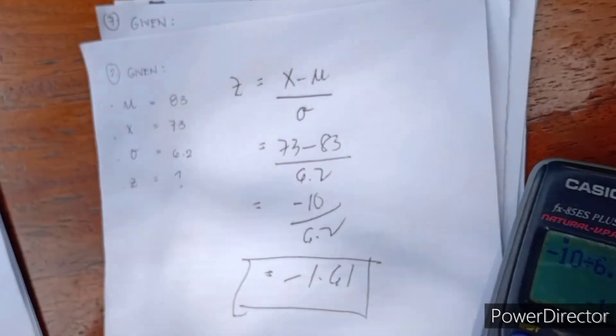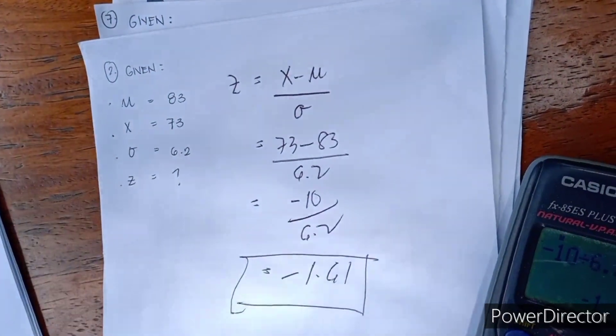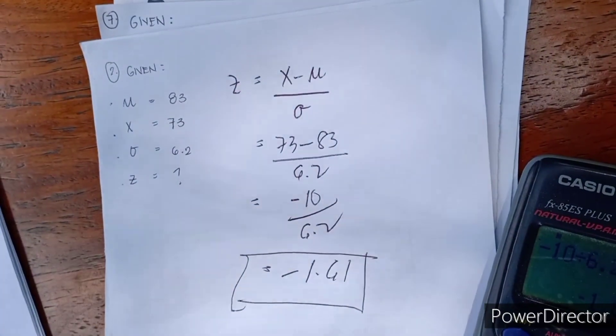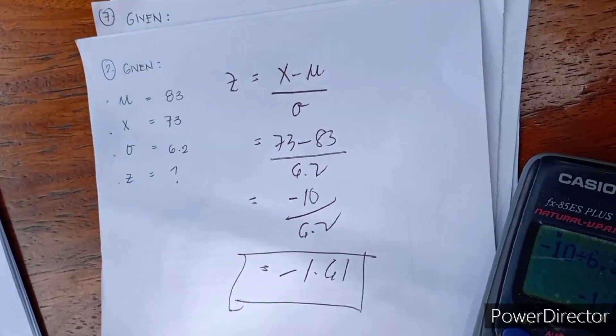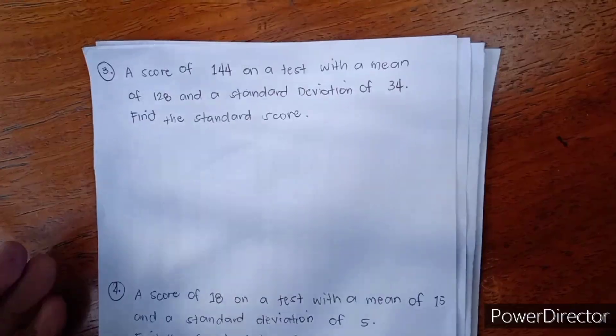Take note: our Z should not go beyond 4. It is either positive or negative.